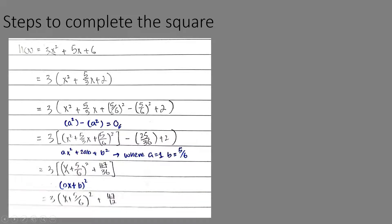Adding and subtracting (5/6) squared results in no overall change to the equation — a squared minus a squared gives zero. So x squared remains the same, and plus 2 remains the same.